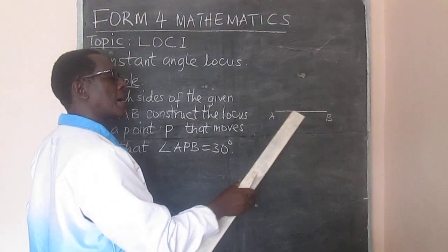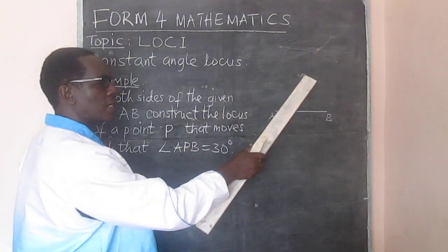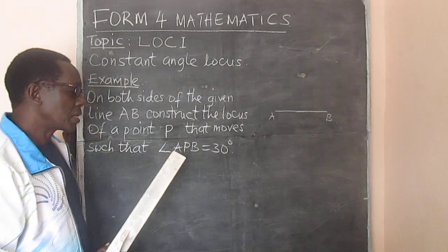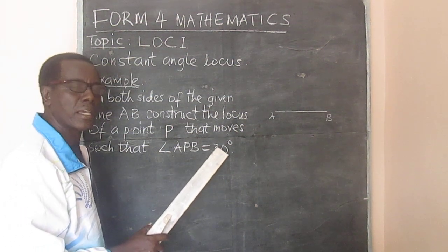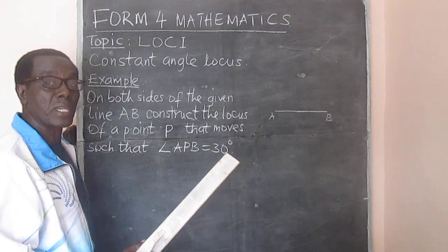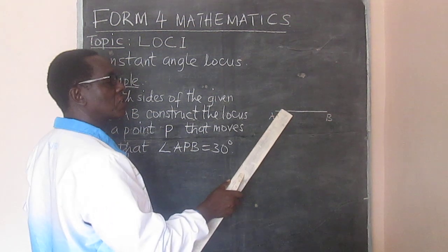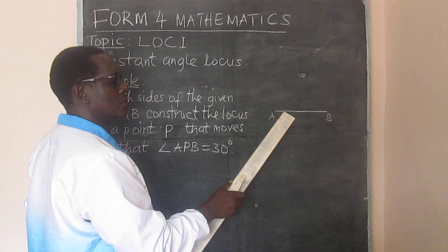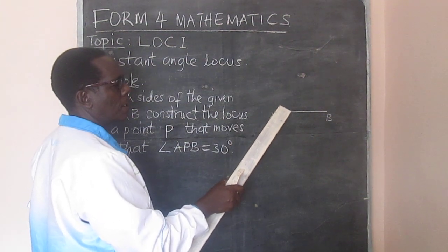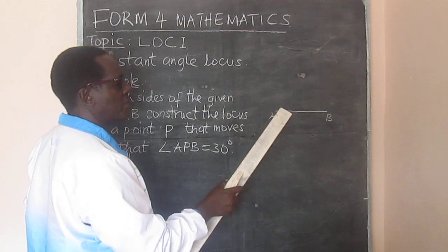Now if we treat AB as a chord of a given circle and we are able to get the center of that circle, we will be able to subtend an angle at the center. Because we would like angle APB to be 30 degrees, the angle at the center of that circle should be twice that, based on the theorem we did in form 2. Therefore, what we need to do is construct an angle of 60 degrees so that we identify the center. But if this is going to be a chord, then we need to complete a triangle.